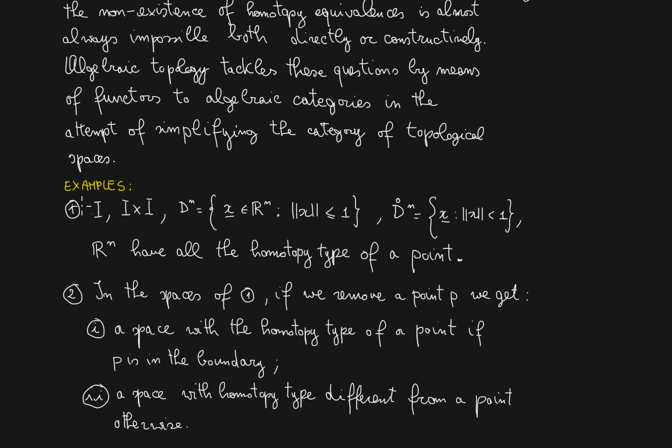In the spaces of example one, if we remove a point from them, we may get two possible homotopy types of spaces. The first one is a homotopy type of a point if p is in the boundary of the topological space. On the other hand, if we remove a point not in the boundary of these spaces, we always get a homotopy type which is different from a point. So they become non-trivial from a homotopy point of view.